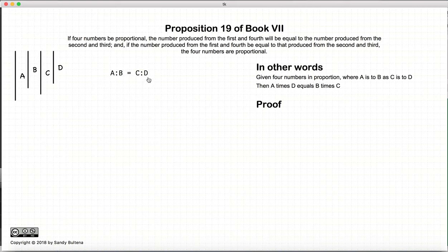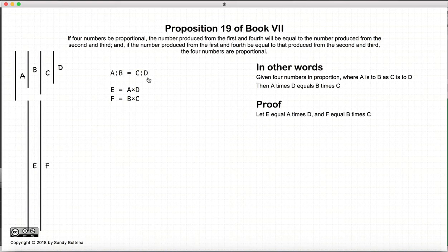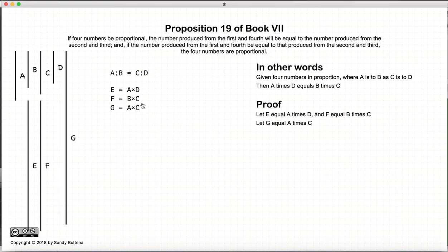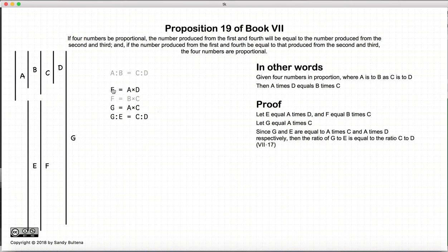Again, we start off with a, b, c, d proportional. We construct two numbers, e and f, such that e is equal to a times d and f is equal to b times c. And we construct yet another number, g, which is equal to a times c. Now, if we look at e and g, they are equal to a times d and a times c respectively, which means that the ratio of g to e is equal to the ratio of c to d. And that's according to Proposition 17 of this book.